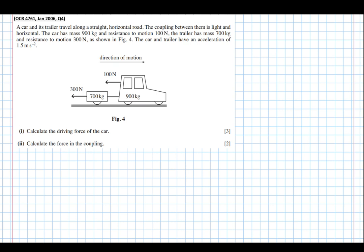The car's resistance to motion is 100 newtons. The trailer has a mass of 700 kilograms and a resistance to motion of 300 newtons. The car and the trailer have an acceleration of 1.5 metres per second squared, accelerating in the forward direction, shown by a double arrow.